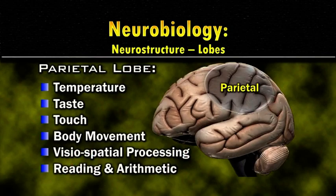The first area of the brain you should know about is the parietal lobe. The parietal lobe handles temperature control, taste, touch, body movement, visuospatial processing, reading and arithmetic — all that complex stuff. The top part of your brain handles spatial orientation — all of that. The top lobe of the brain.